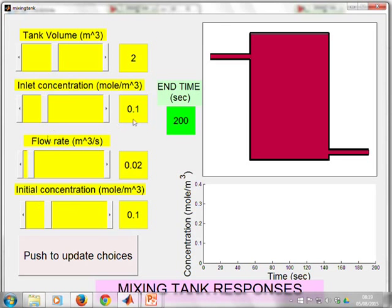So what I could do is I could say let's set the inlet concentration to be 0.4. There we go, which is the maximum it's allowed for this particular GUI. And then I can use this push to update choices button and it will give me the simulation.